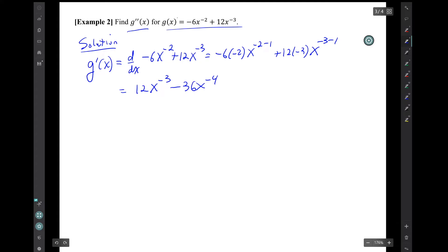So the result is that g' is 12x^(-3) - 36x^(-4). Notice that I included this step where I did not do the arithmetic in my head.